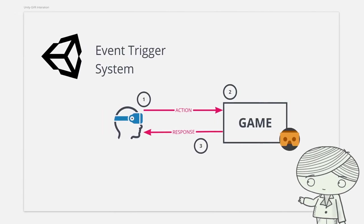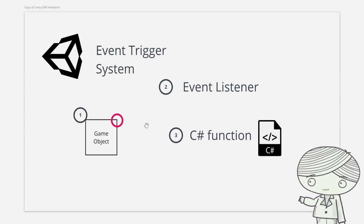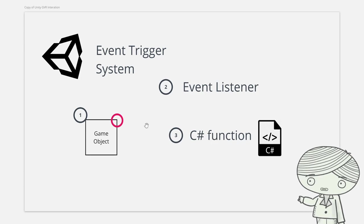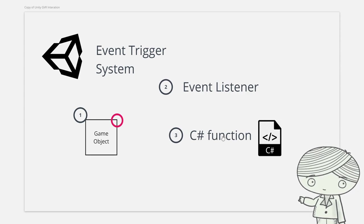All of this Unity is using an event listener to listen to these events. The core thing of this class is how to respond to a certain action. In Unity, the simplest way is to write a C# script — just like a normal program, you write down what you want to do. For example, I want to explode, kill an enemy, or play audio. You write it inside a C# file, and when the event happens — for example, when the reticle touches the object — Unity will run that part of the program. This is what we call the event trigger system.